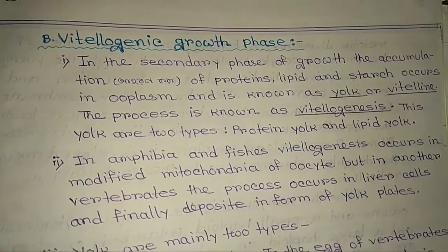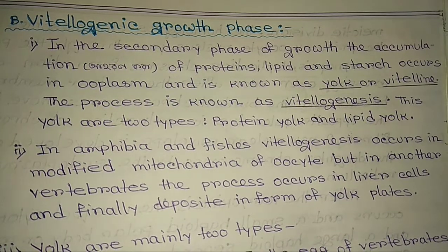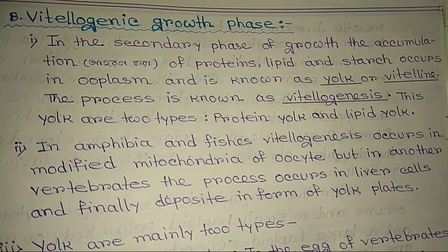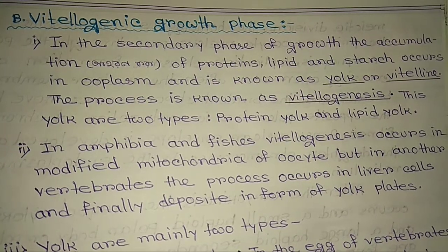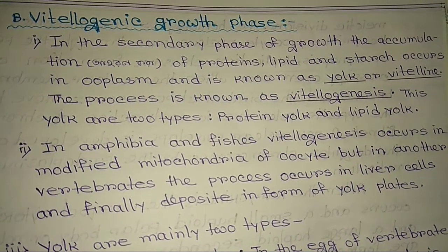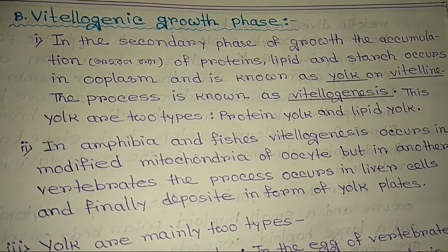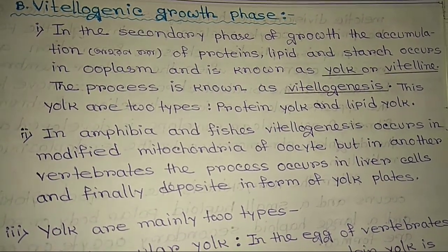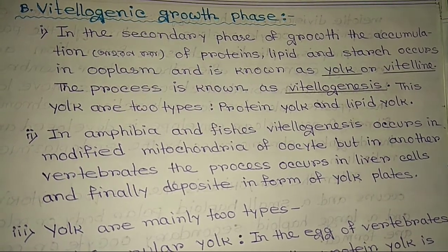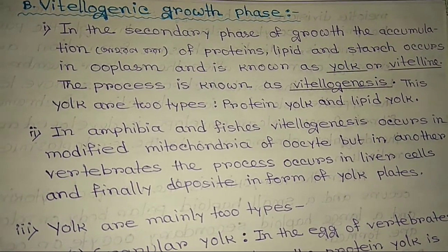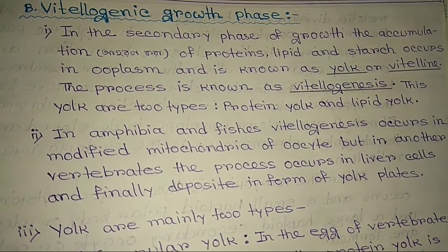The next sub-phase is the vitellogenic growth phase. In the secondary phase of growth, the accumulation of proteins, lipids, and starch occurs in the ooplasm, which is known as yolk or vitelline. This process is known as vitellogenesis. The yolk is of two types: protein yolk and lipid yolk. In amphibia and fish, vitellogenesis occurs in modified mitochondria of the oocyte, but in other vertebrates, the process occurs in liver cells and finally deposits in the form of yolk plates.